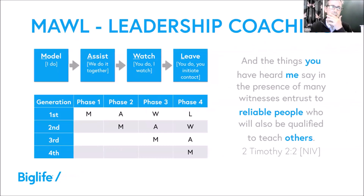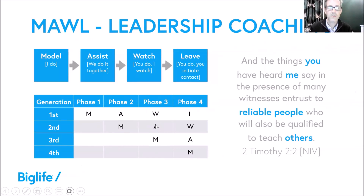Just to say, model, assist, watch and leave — there are four processes, starting off with you doing it all and then stepping back bit by bit. Each step, if you have someone assisting you, they are learning as they apprentice alongside you. That allows somebody else to model it, and you get the person you were assisting to assist themselves. Then you can simply watch and eventually leave, and you've still got a group of people doing what they were taught.